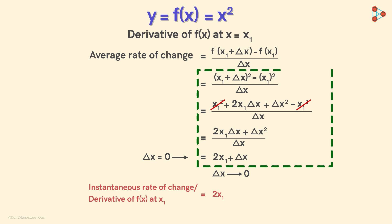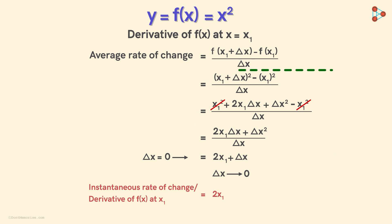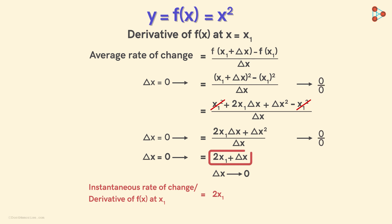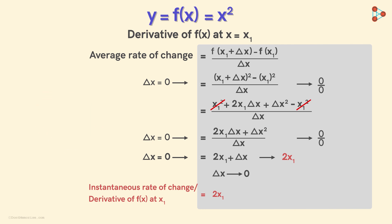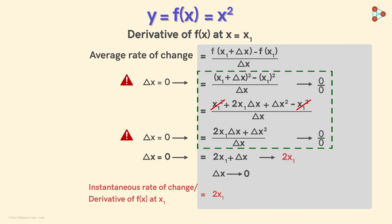But notice that all these expressions are equivalent to each other. So what if instead of putting delta x equal to zero in the final expression, we put delta x equal to zero in an earlier step? We see that we would get the numerator and the denominator both equal to zero. But for the final expression, we got the answer as 2 times x1. Actually, substituting delta x equal to zero at any earlier step is not correct — in those steps we are dividing by delta x, and we know we can't divide by zero.